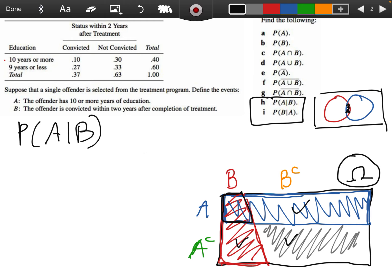So we're being told in this case, suppose someone who went through the treatment is an offender who winds up getting convicted within two years after completion - I'm sorry, I said training, but treatment. So suppose the offender is convicted within two years after completion of treatment, what's the probability that they're a person with 10 or more years of education?